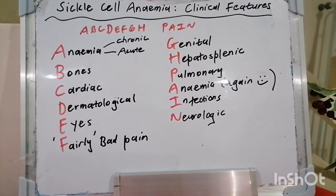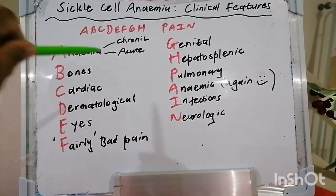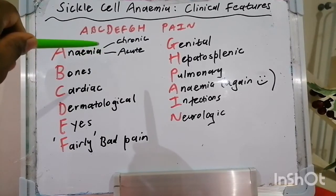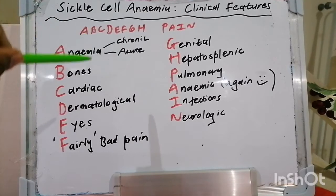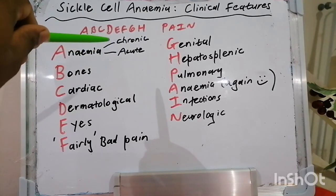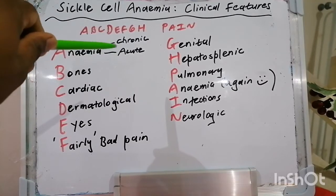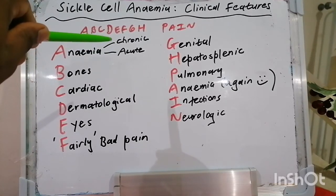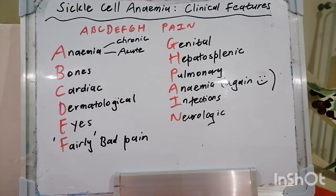There are three specific crises in the setting of acute sickle cell anemia. First, the aplastic crisis, in which there's transient arrest of erythropoiesis. Second, the splenic sequestration crisis, where there's venous occlusion of the spleen leading to pooling of red cells in the spleen. Third, the hyper-hemolytic crisis, where there's sudden onset of severe hemolysis. All of these may be triggered by viral infections such as parvovirus B19.